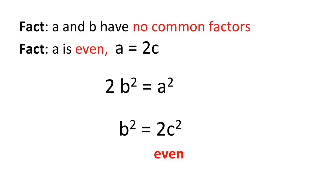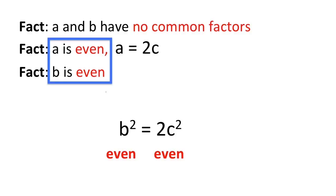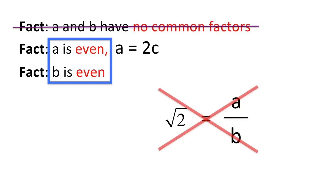Since the right side of this new equation is even, this means that the left side is also even, and so b is even. Now we have that a and b are both even, contradicting our earlier assumption that they have no common factors. This means that we can't write root 2 as a over b, so it is irrational.